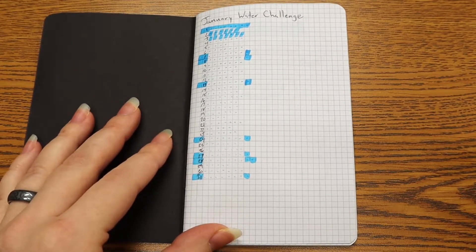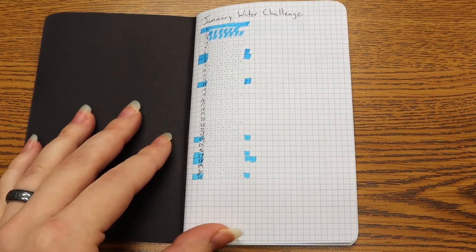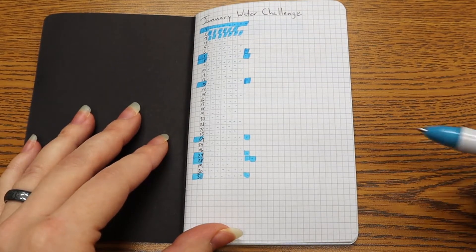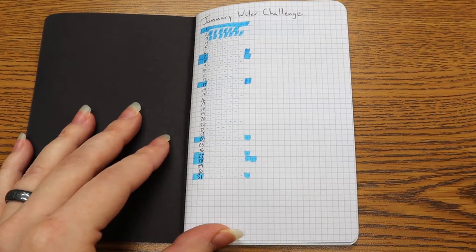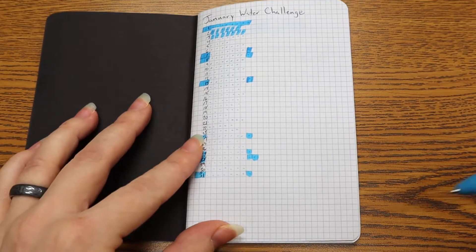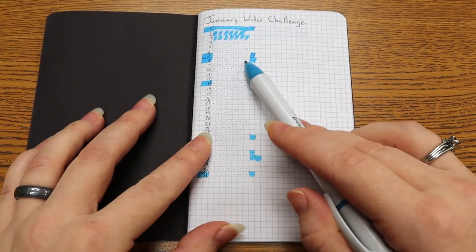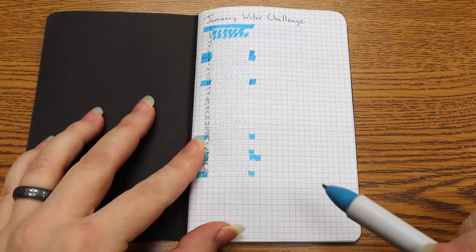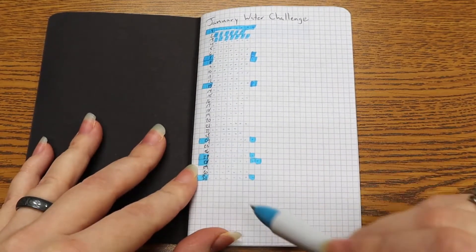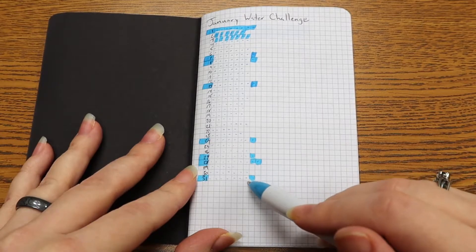I have already made a January water challenge tracker, where I just checked how much water I drank in a day. And that way I knew if I needed to be drinking more often. You can see I made just small dots as I was drinking throughout the day, so it was easy to quickly mark them and continue on with my day.